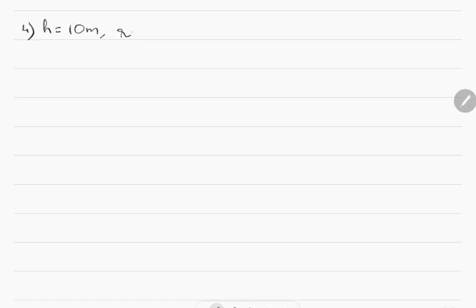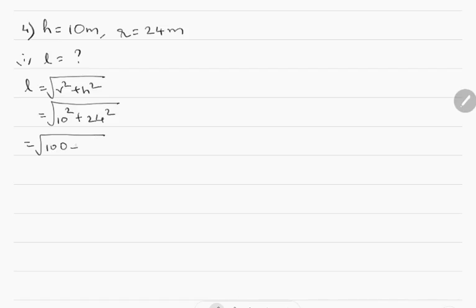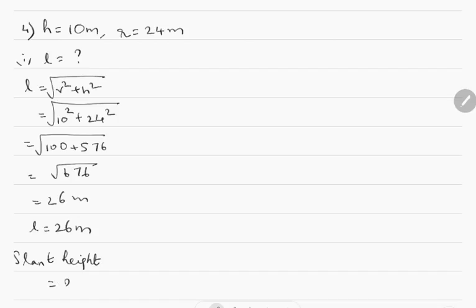Problem number 4: A conical tent is 10 meters high and the radius of its base is 24 meters. Find number 1, the slant height of the tent. Number 2, the cost of the canvas required to make the tent if the cost of 1 square meter canvas is Rs. 70. Given height is 10 meters, radius is 24 meters. The slant height L equals square root of R squared plus H squared, which is square root of (10 squared plus 24 squared) equals square root of (100 plus 576) equals square root of 676 equals 26 meters.